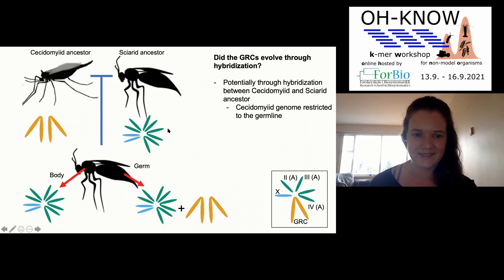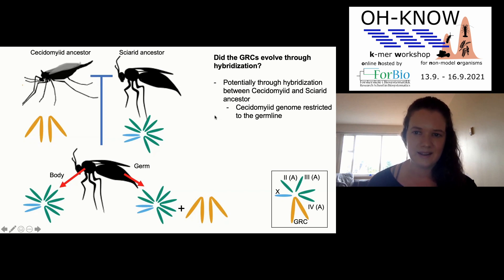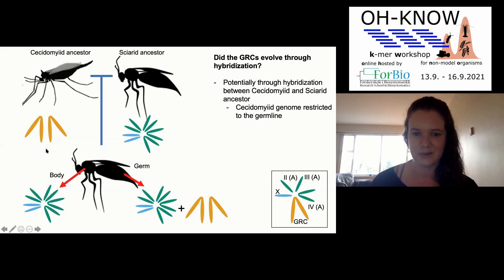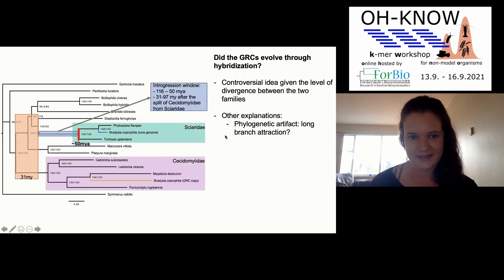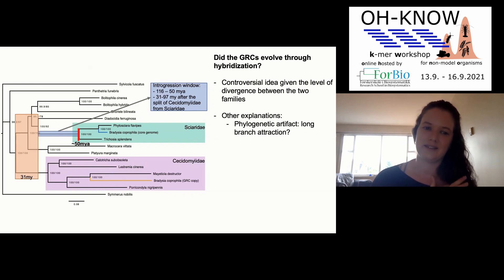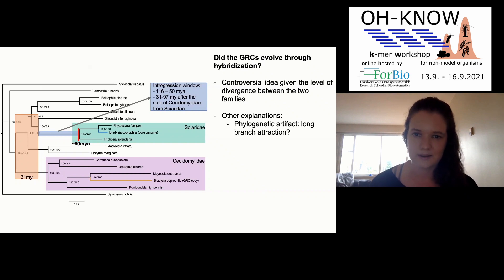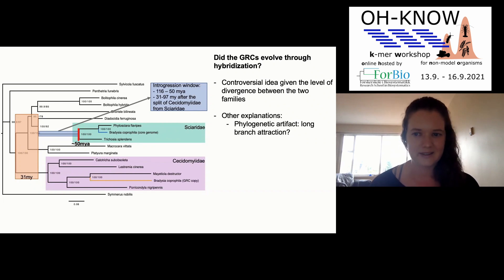This suggests the GRCs evolved through hybridization between a Cecidomyiidae and Sciaridae ancestor, with genes coming from the Cecidomyiidae lineage then becoming restricted to the germline and forming the GRCs. This idea is a bit controversial given the divergence level — the hybridization would have had to happen around 30 million years after the split between the two families. The data does seem to fit this hypothesis, but we're also investigating other explanations such as long branch attraction.